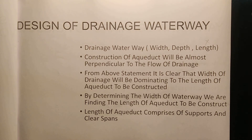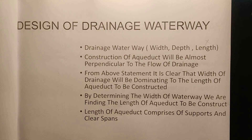It is called a bay, and we call these supports. One of them is called End Support and the other is Intermediate Support. End Support is called Abutments. That is why we call all supports in this way. Intermediate supports are called Piers — P-I-E-R-S.